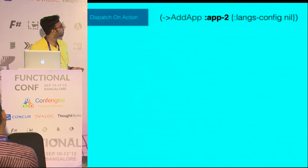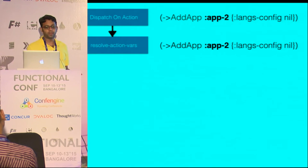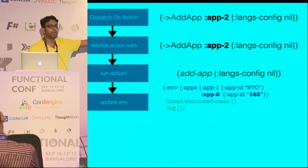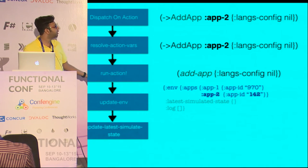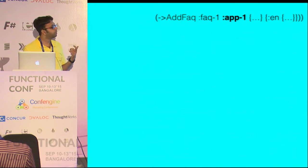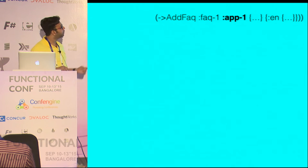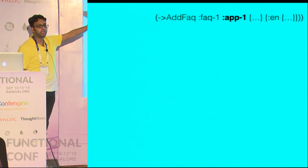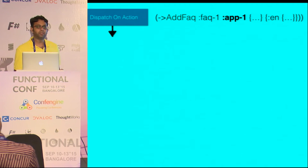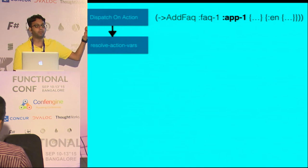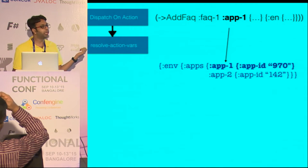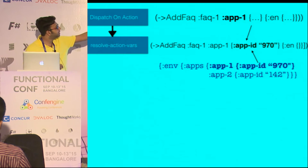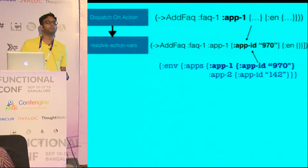Next time I add another app — dispatch again on add-app, call resolve-action-vars, nothing to resolve, run action, get add-app 2, add it to the environment with a new ID. Now here's the interesting part: I would like to add an FAQ, call it FAQ 1, to app 1 which was already created. I dispatch on add-FAQ implementation for resolve-action-vars. Here the var is app 1 — what is app 1? I don't know. So I look into the environment, see what app 1 refers to — which is app ID 970 — and put that back inside the map, because it will be used by the actual implementation.